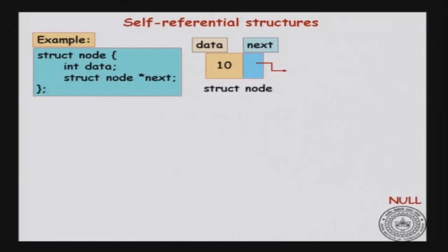Let us introduce the notion called self-referential structures. We are defining a struct node that has two fields: one is an int data, and the next field is a pointer to type struct node. This C structure is called a self-referential structure because internally there is a pointer to an object of the same type — it refers to some other object of the same type.